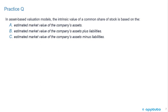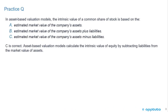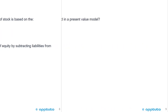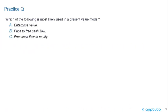Next question: In asset-based valuation models, the intrinsic value of a common share of stock is based on: A) estimated market value of the company's assets, B) estimated market value of the company's assets plus liabilities, or C) estimated market value of the company's assets minus liabilities. C is correct. Assets equal liabilities plus equity, so assets minus liabilities equals equity, which is where we find the common shares. Asset-based models calculate intrinsic value by subtracting liabilities from the market value of assets.